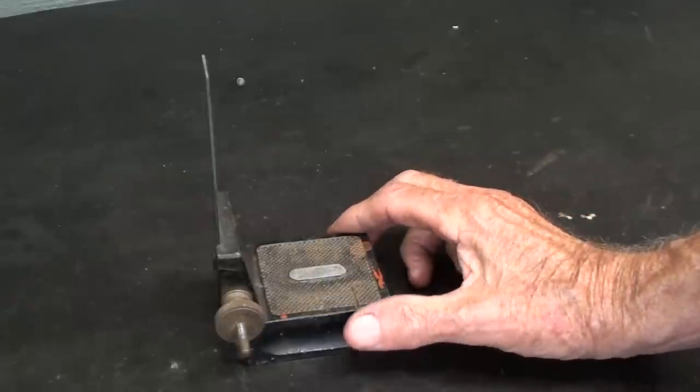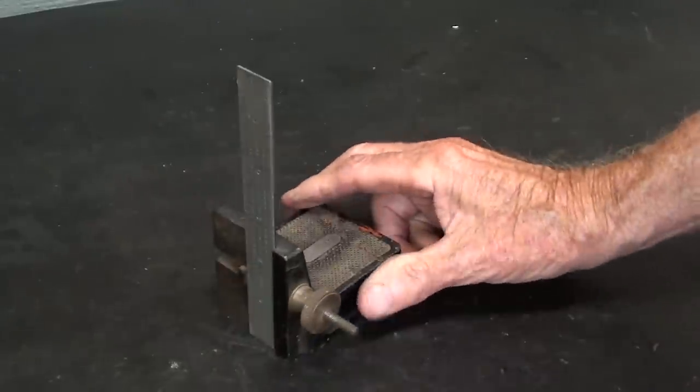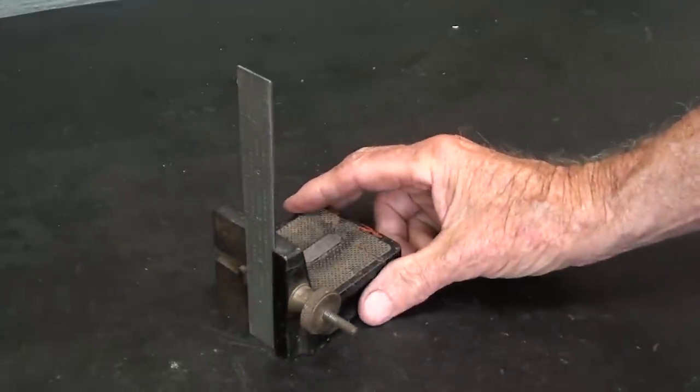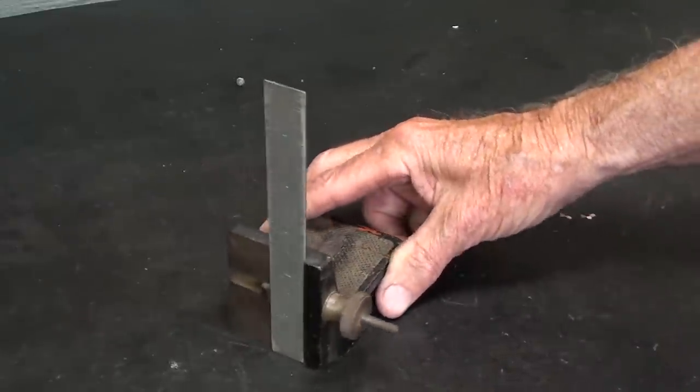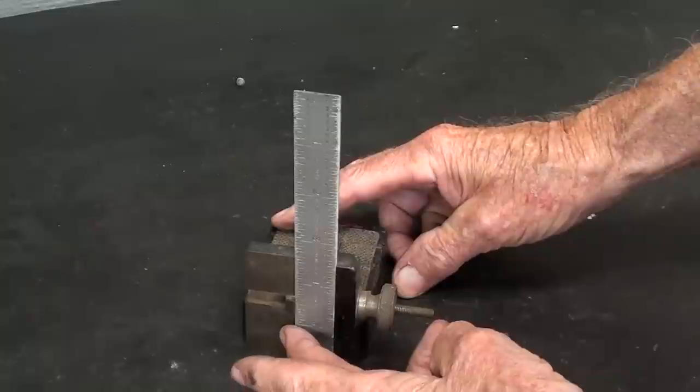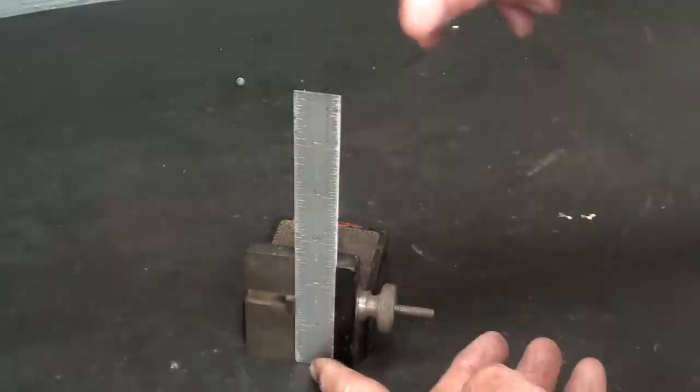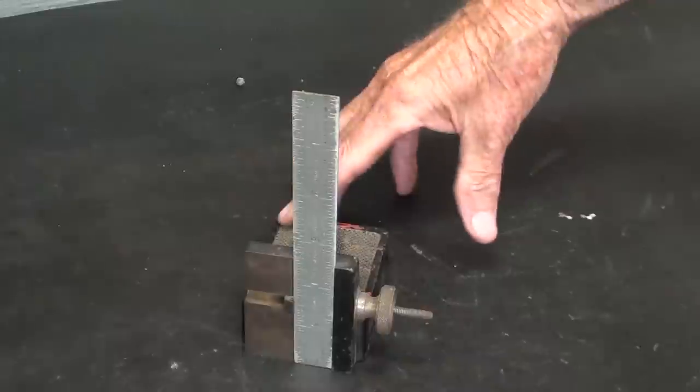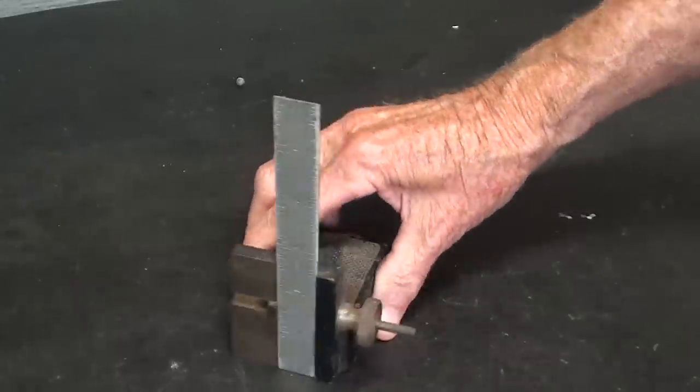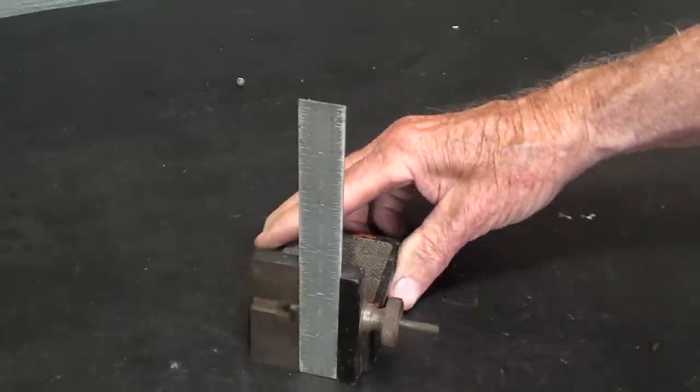This is a rather obscure Starrett tool. They still make them, and they've been making them for about 100 years. I can't imagine there's a real big market for them, but the whole purpose is to hold a ruler of various widths or lengths, anywhere from three quarter wide up to one and nine sixteenths ruler in a perfectly vertical position.